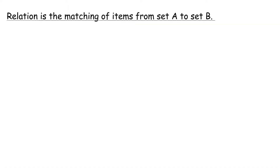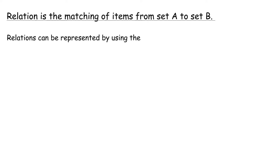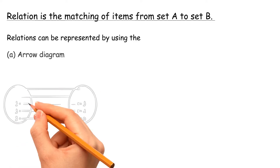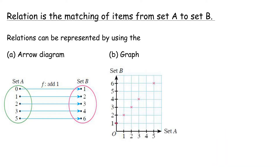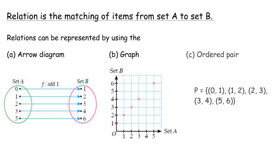A relation is the matching of items from set A to set B. Relations can be represented using: A) an arrow diagram, B) a graph, and C) ordered pairs.